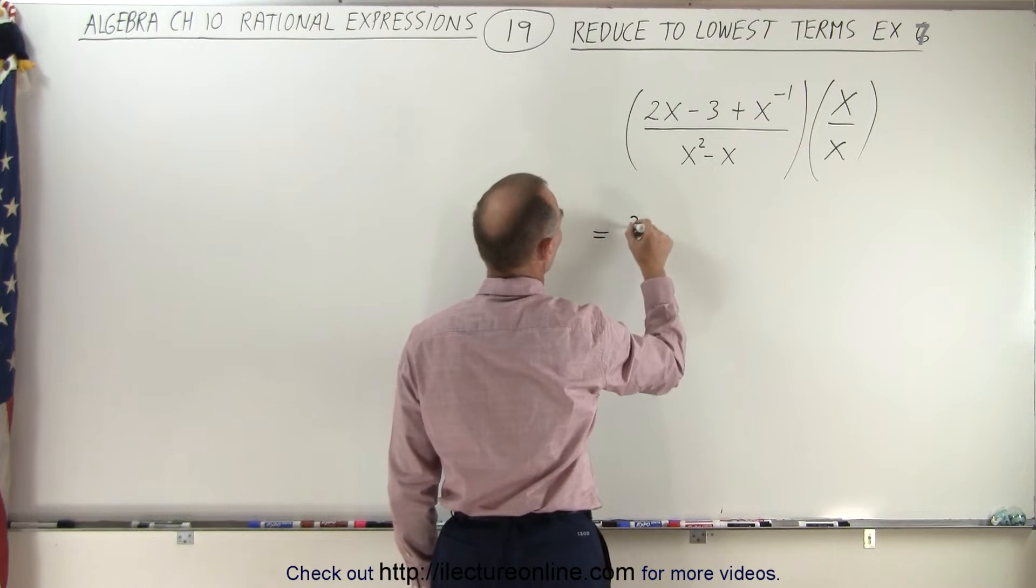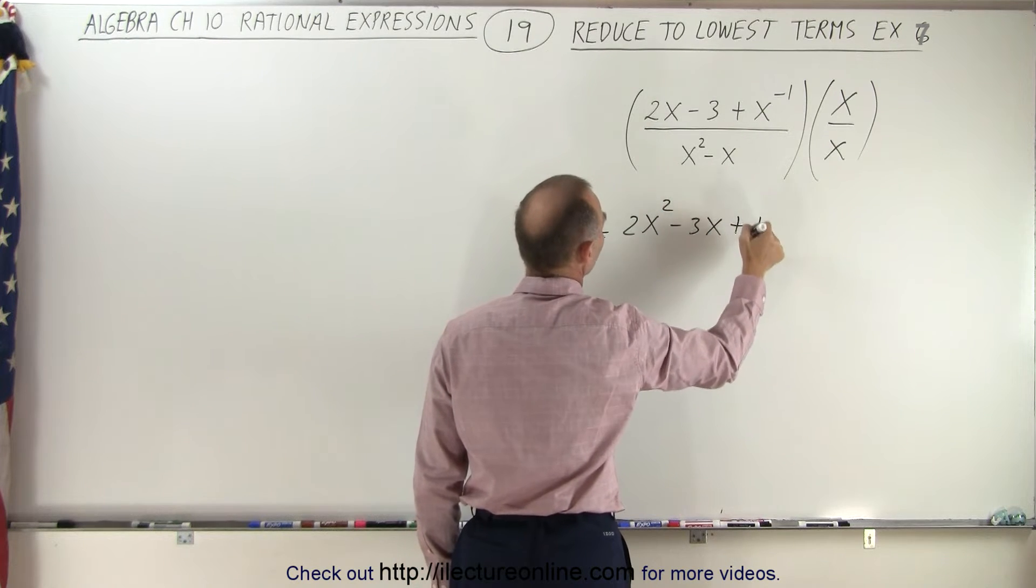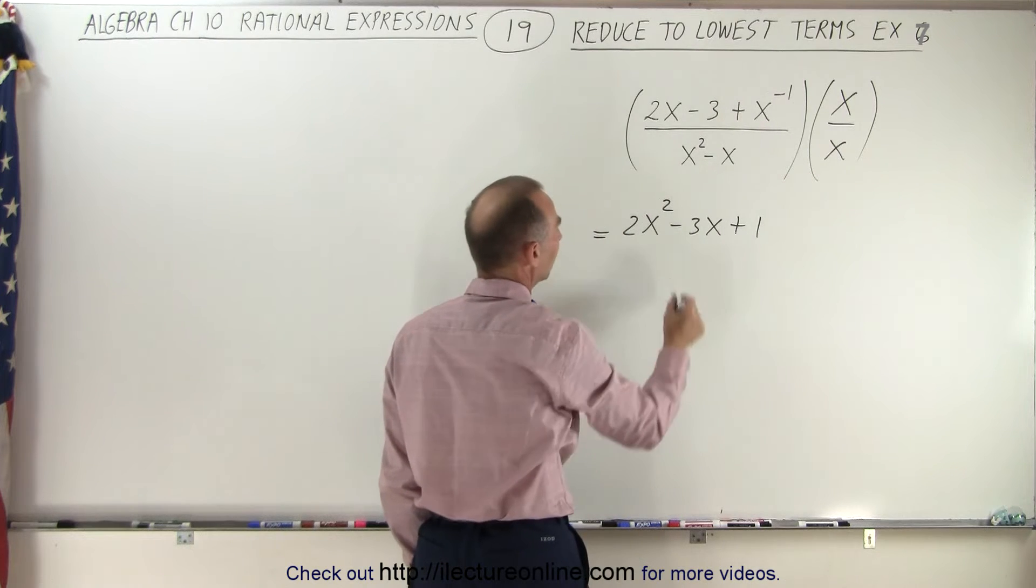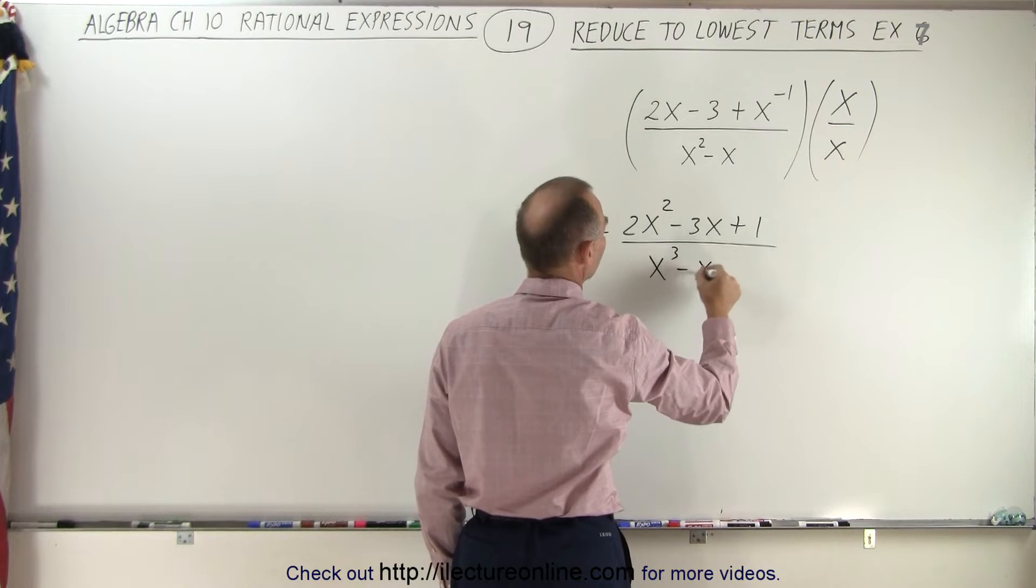So this now becomes 2x squared minus 3x plus 1, because x to the minus 1 times x to the positive 1 simply becomes equal to 1. In the denominator, we end up with x cubed minus x squared.